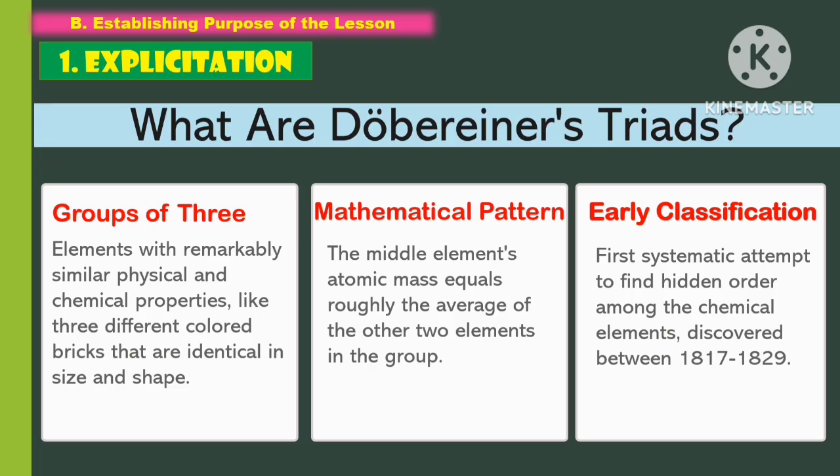Now, let's talk about what are Dobereiner's Triads. It is a group of three elements with remarkably similar physical and chemical properties — like three different colored bricks that are identical in size and shape. When it comes to mathematical pattern, the middle element's atomic mass equals roughly the average of the other two elements in the group. As for early classification, it was the first systematic attempt to find hidden order among the chemical elements, discovered between 1817 and 1829.